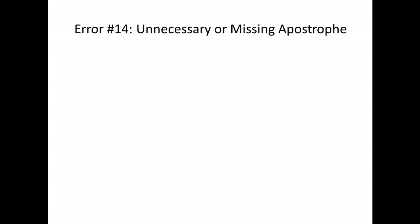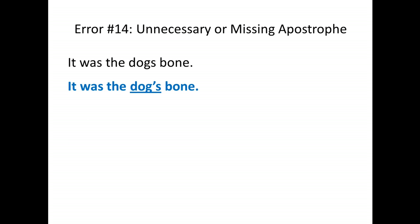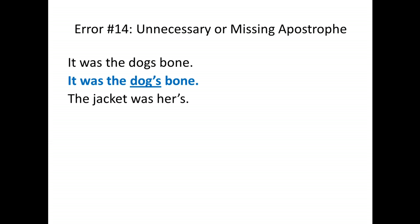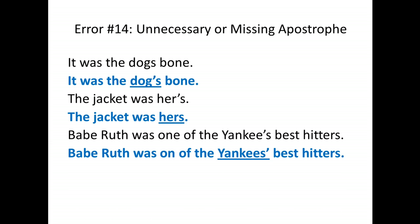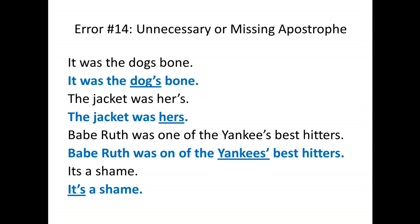Error fourteen is unnecessary or missing apostrophes. 'It was the dog's bone' — that's the possessive, so it takes an apostrophe. 'The jacket was hers' — we don't use the apostrophe with 'hers.' 'Babe Ruth was one of the Yankees' best hitters' — the team name is plural, so the apostrophe comes after the S: Yankees'. 'It's a shame' should be the contraction 'it is a shame' — contracted with an apostrophe.